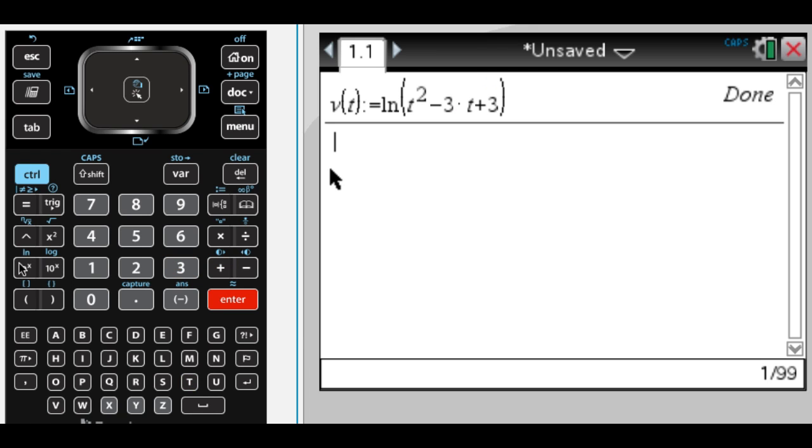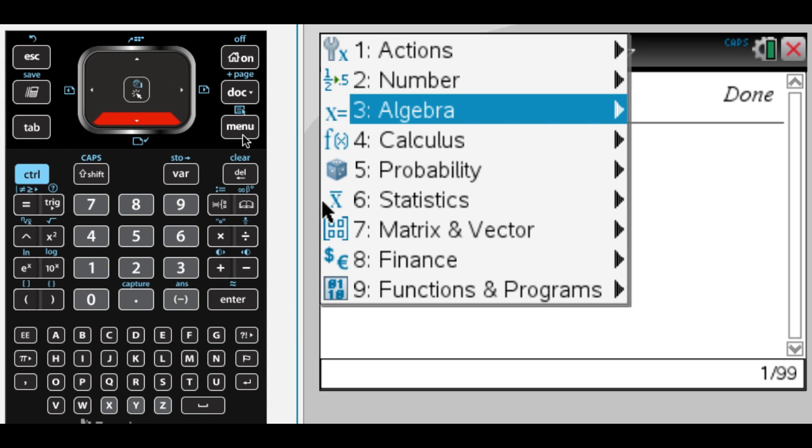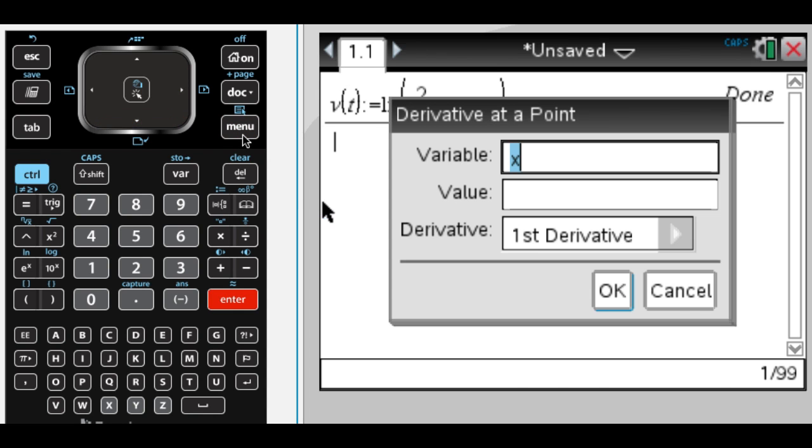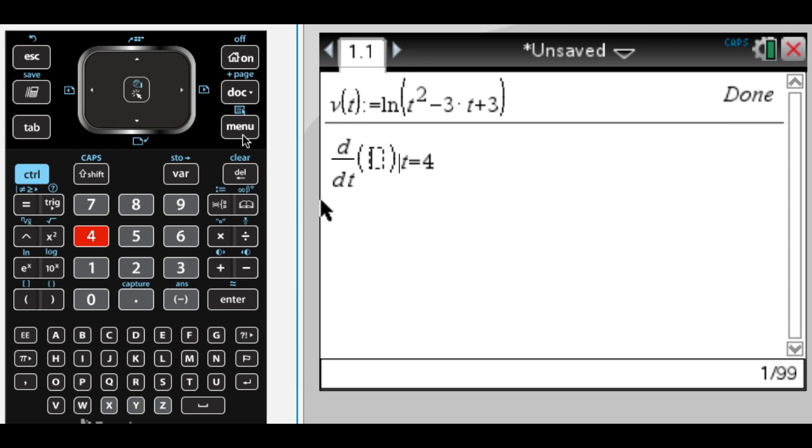First question, I need the acceleration of the particle at t equals 4. Well, a of t equals v prime of t. So what I'm going to do is find v prime of t, and I want v prime of 4. So I get 5 sevenths. There are no units given, so 5 sevenths is my answer there.